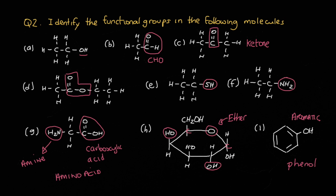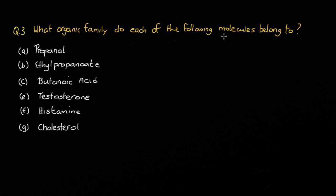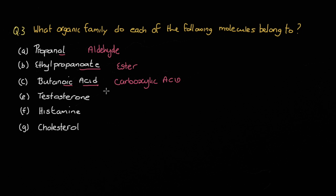Question three: what organic family do each of the following molecules belong to? Pause and come back when you're ready. A ends with AL, making it an aldehyde. B ends with OAT, making it an ester. C is butanoic acid — it has the OIC ending, so it's a carboxylic acid. Testosterone happens to be a hormone but it's also a ketone — recall that if you have ONE at the end, it's a ketone. Histamine, which we find in the body during inflammatory responses, is an amine. And finally, cholesterol has an OL at the end, so it has an alcohol functional group.